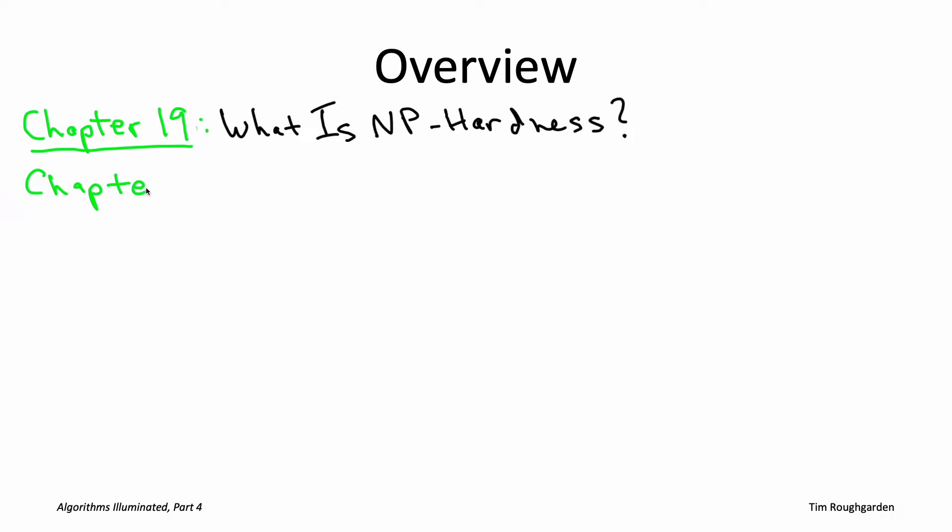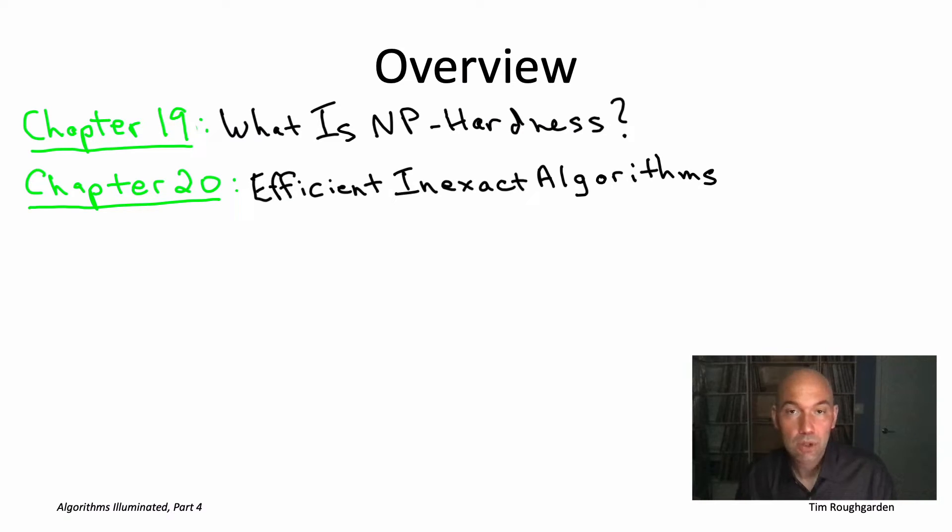So in the second chapter, chapter 20, we're going to be looking at compromising on correctness. So we're going to look at algorithms which are guaranteed to run quickly, but are only in some sense approximately correct. The first half of the chapter will focus on heuristic algorithms with provable guarantees that are guaranteed to be close to optimal, primarily using greedy algorithms. And the second part of the chapter will discuss local search and its variants, which often does not have provable guarantees, but is nonetheless unreasonably effective at tackling many NP-hard problems in practice.